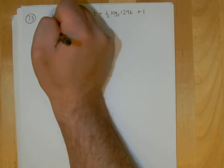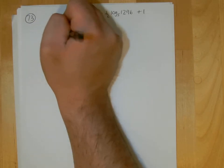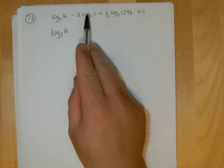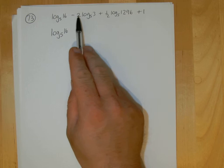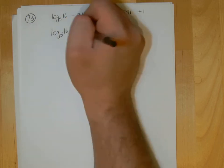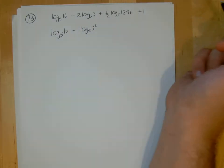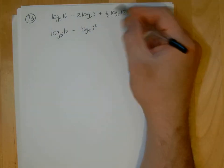That just stays the same - there's nothing we can do, that's just log base 5 of 16. Here though, we can use laws of logs. We can take that two up so it becomes a power like that. And the same here, we take that half up.